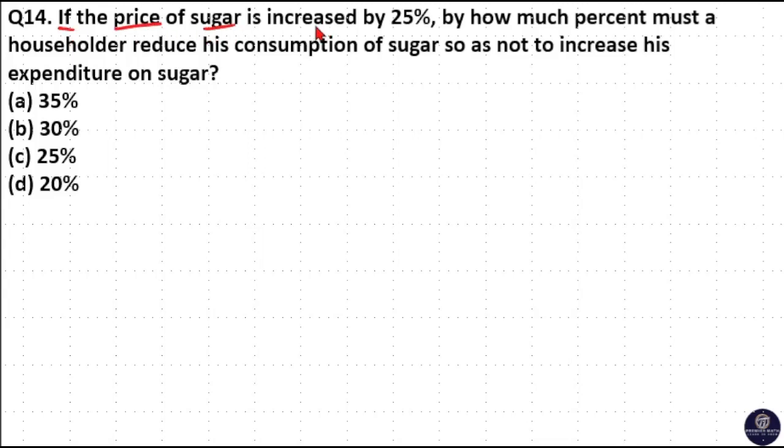If the price of sugar is increased by 25%, by how much percent must a householder reduce his consumption of sugar so as not to increase his expenditure on sugar?